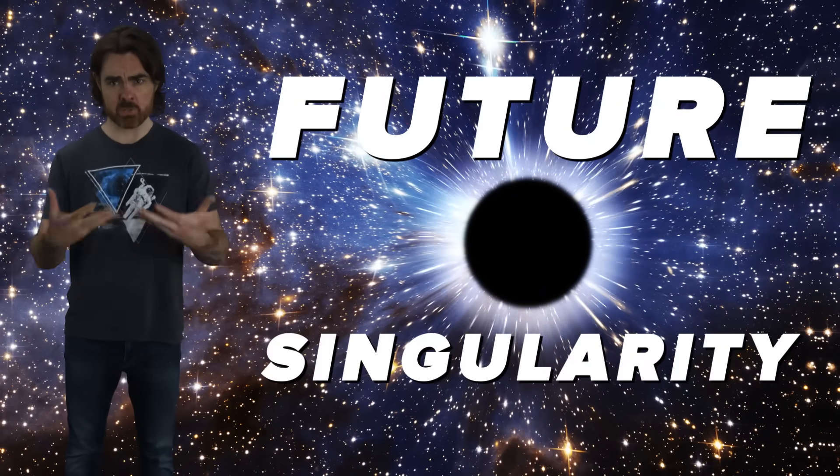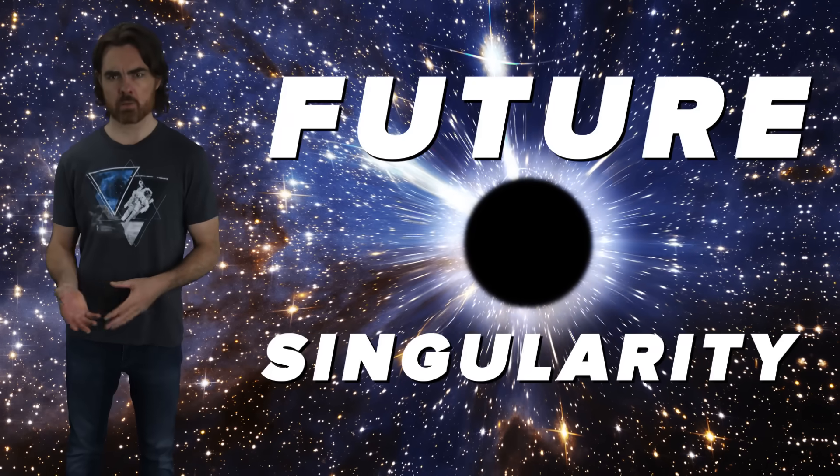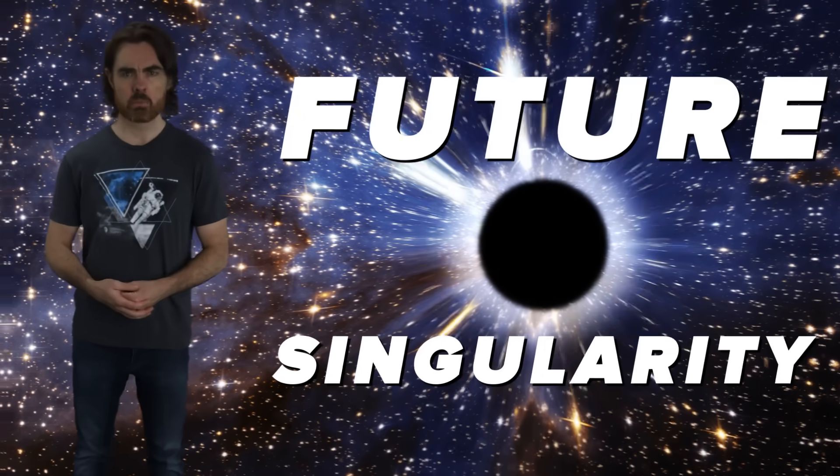Now, a real black hole forms from the gravitational collapse of a massive star's core. After the collapse, the future singularity comes into being. And in the past, well, there's just a star. But what does this idealized eternal black hole look like in the past?